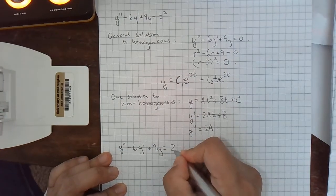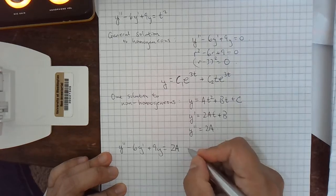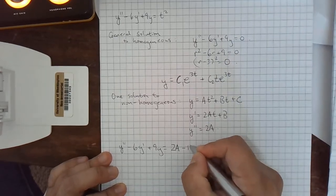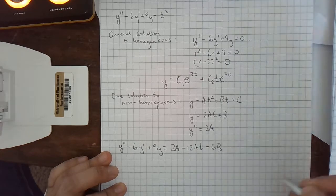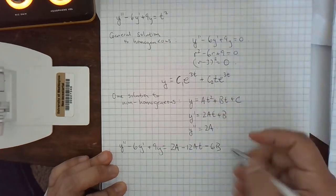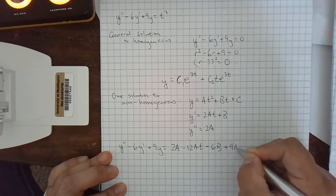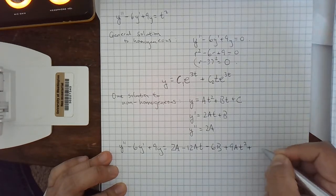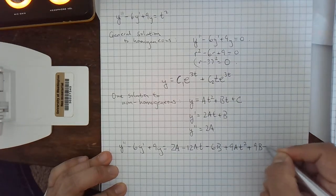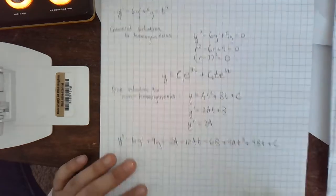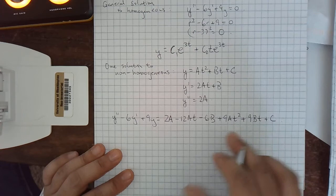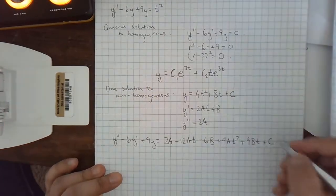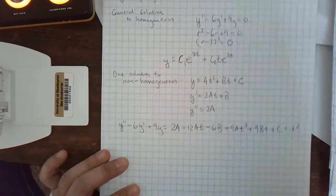That's 2a minus 6 times this thing. So minus 12a t minus 6b plus 9 times this thing. And I'm expanding as I go because this is a lot of writing either way. So I'm just trying to make it a little bit less writing. This is fine. This is an okay amount of work to show. And then this is supposed to equal the right side, t squared.